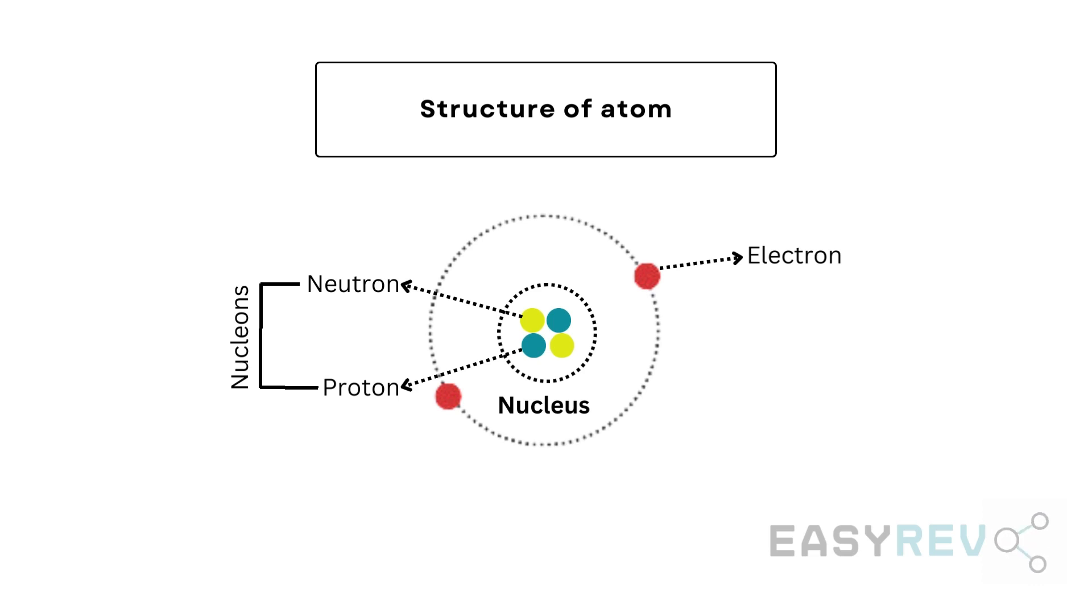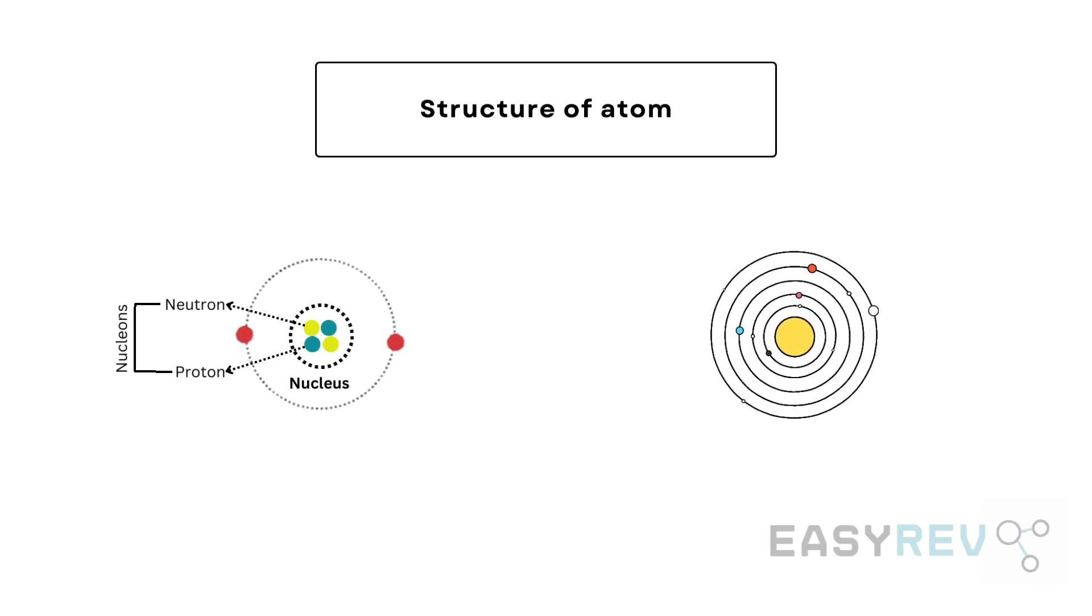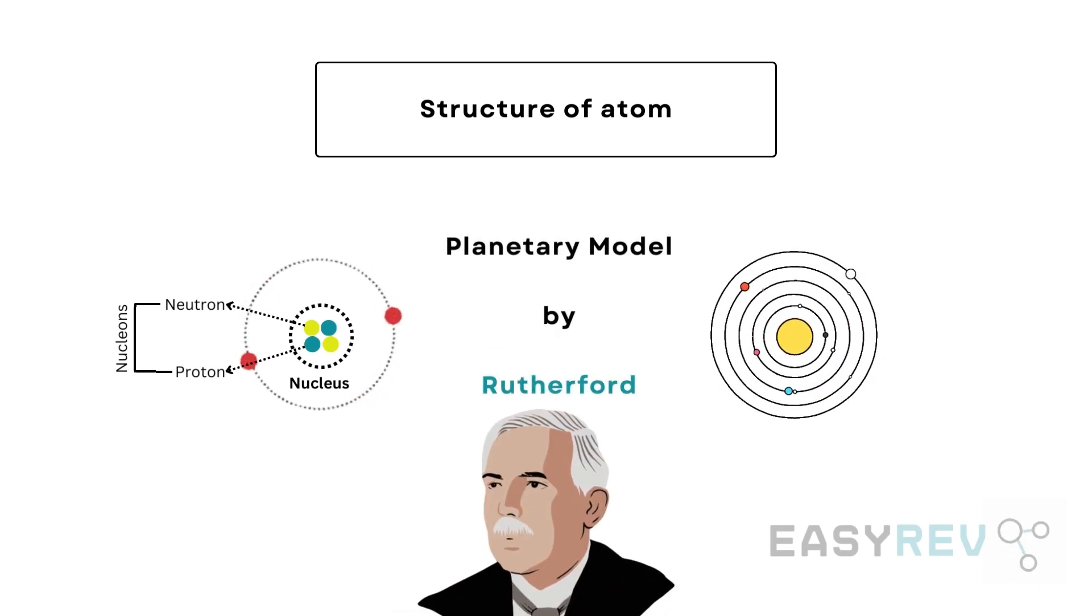The electron is this pink dot that we see outside of the nucleus. This is where electrons stay in fixed orbits, much like how planets orbit around the sun. For this reason, this model of the atom is also called the planetary model of the atom, which was first proposed by Rutherford.